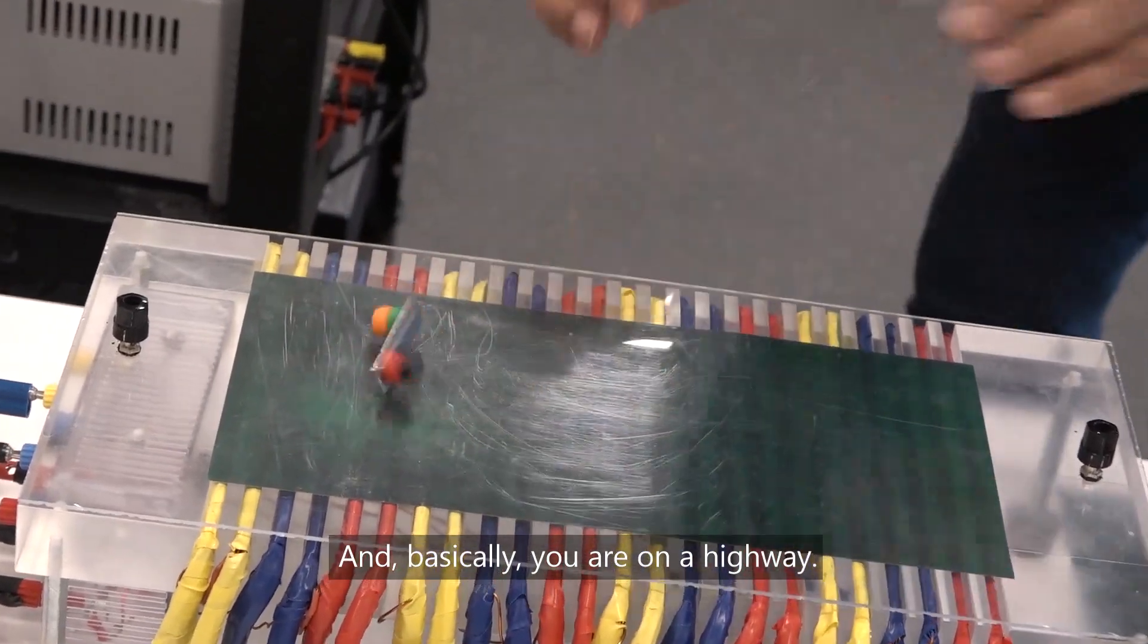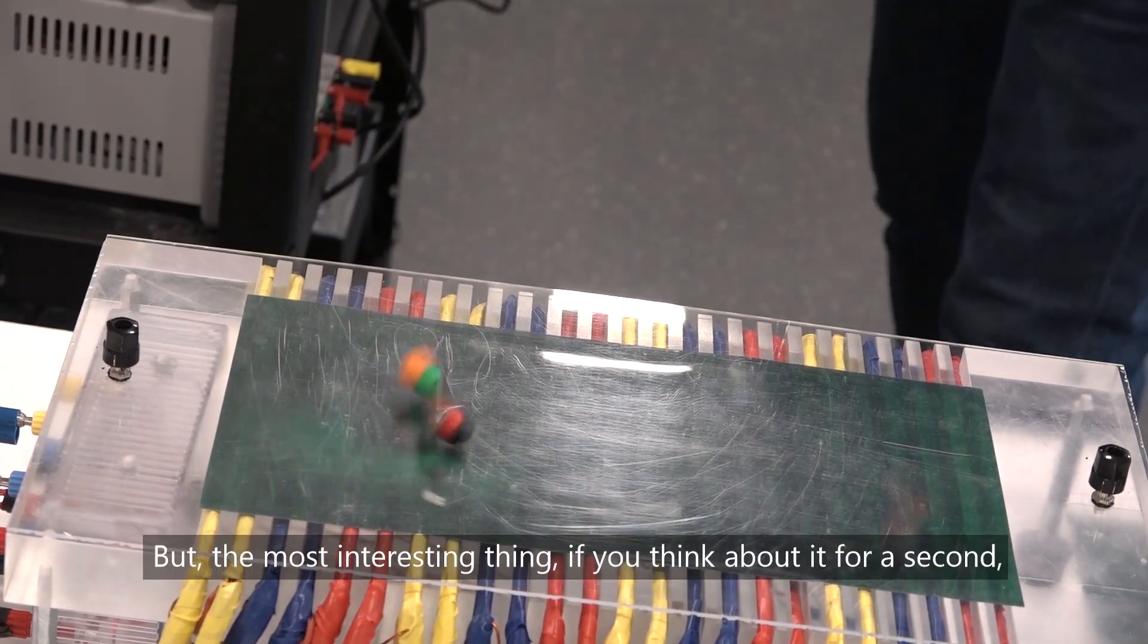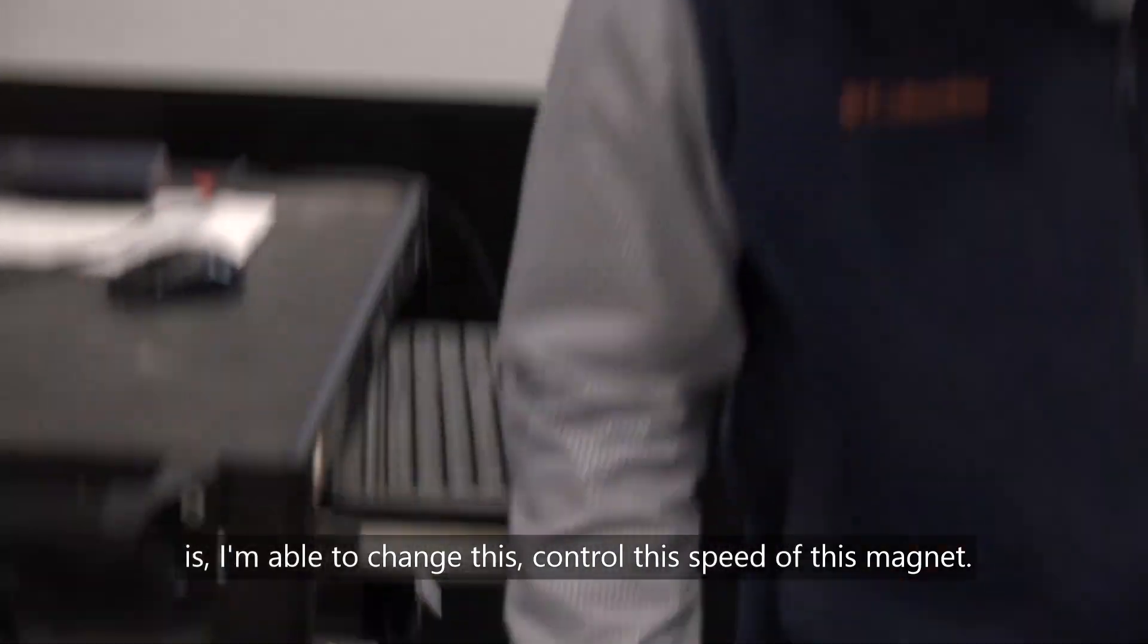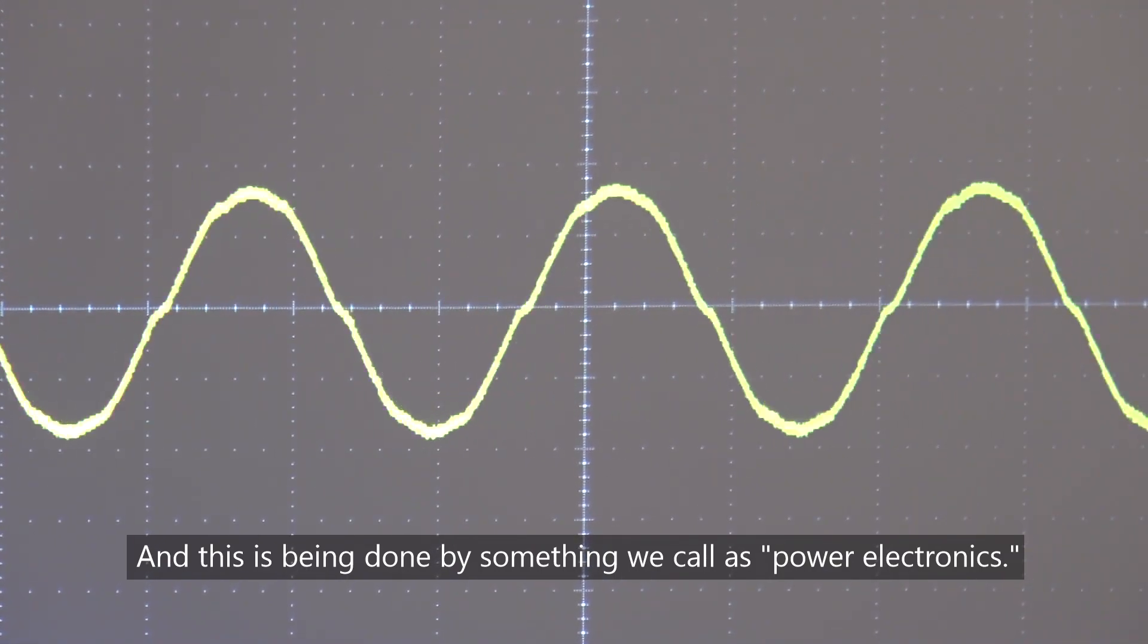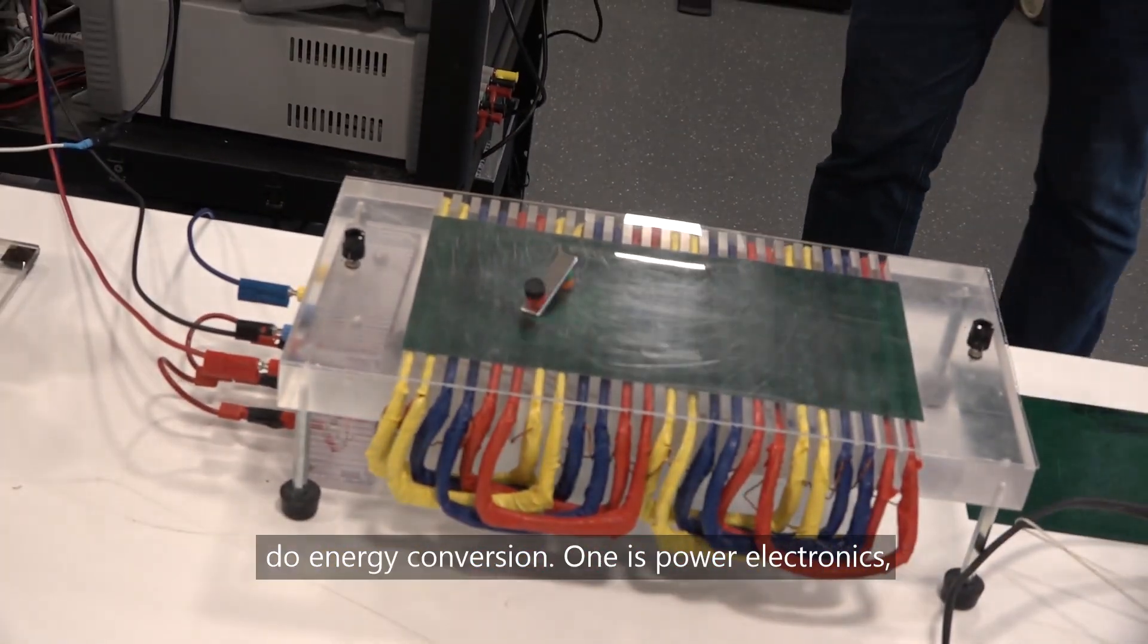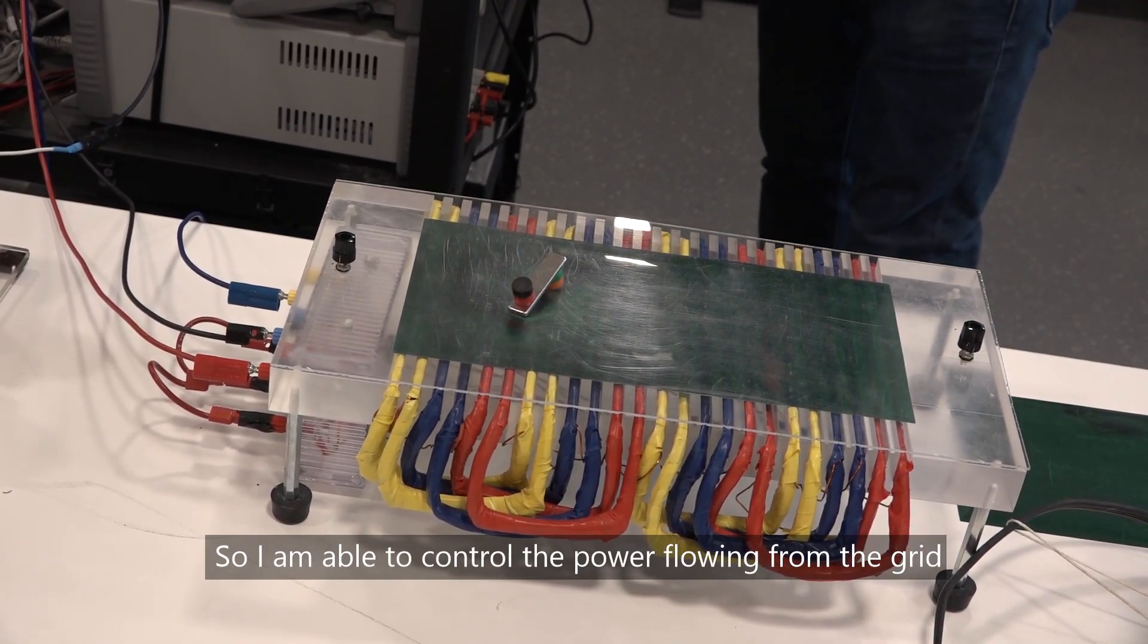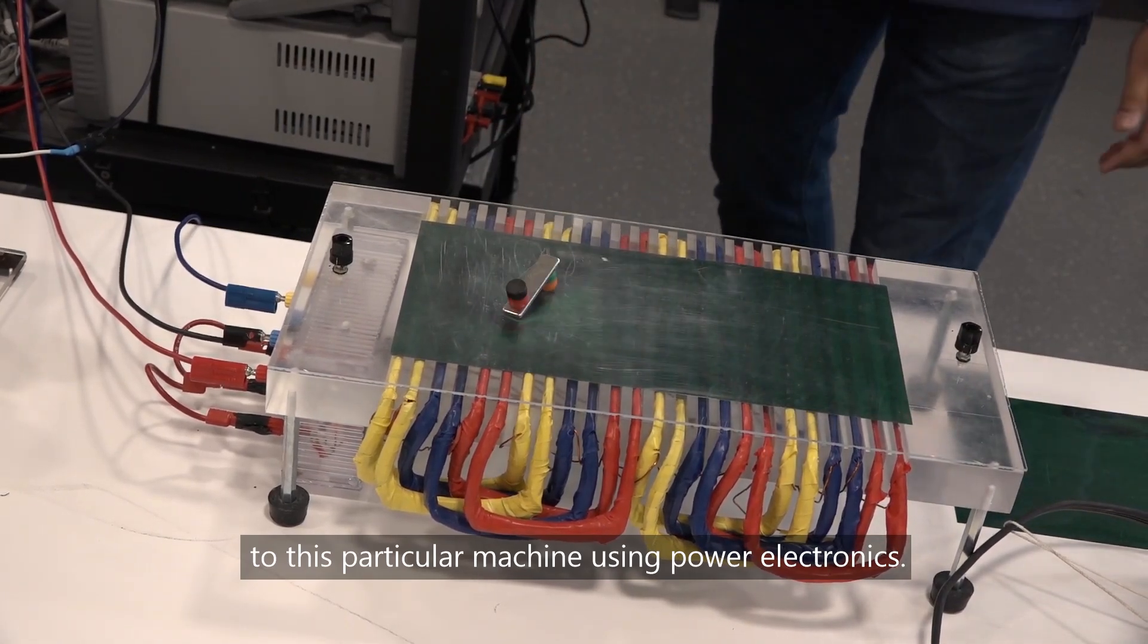Basically you're on a highway. That's how electric machines work. But the most interesting thing, if you think about it for a second, is I am able to control the speed of this magnet, and this is fascinating. This is being done by something we call power electronics. You can think about it that there are three pieces to do energy conversion: one is power electronics, one is electric machines, and one is control. I'm able to control the power flowing from the grid to this particular machine using power electronics.